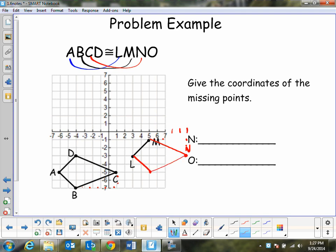So L, M, N, and O. So there's the answer there. So we've got 7, 8, 9, 10. So N is at 10 comma 3.